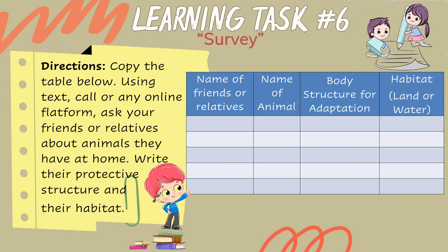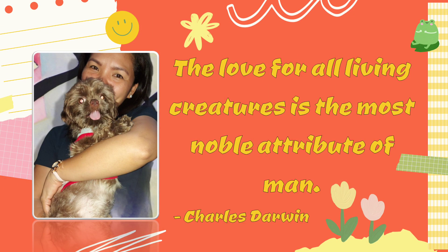Way to go, children — you are now in the last part of your journey! Learning Task Number Six: Survey. Copy the table and, using a text call or any online platform, ask your friends or relatives about the animals they have at home. Write their protective structure and their habitat. Congratulations, children — I hope that you have learned a lot in this quest!